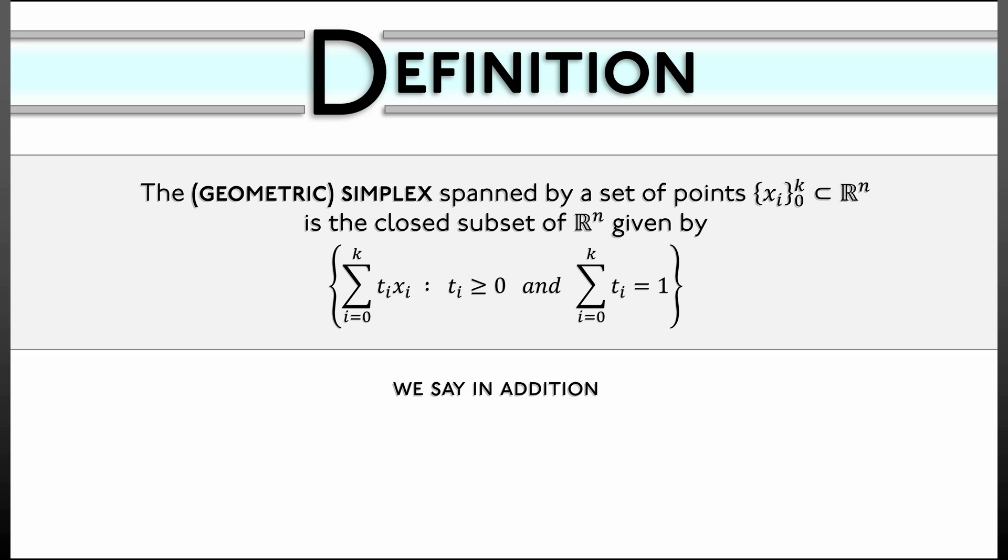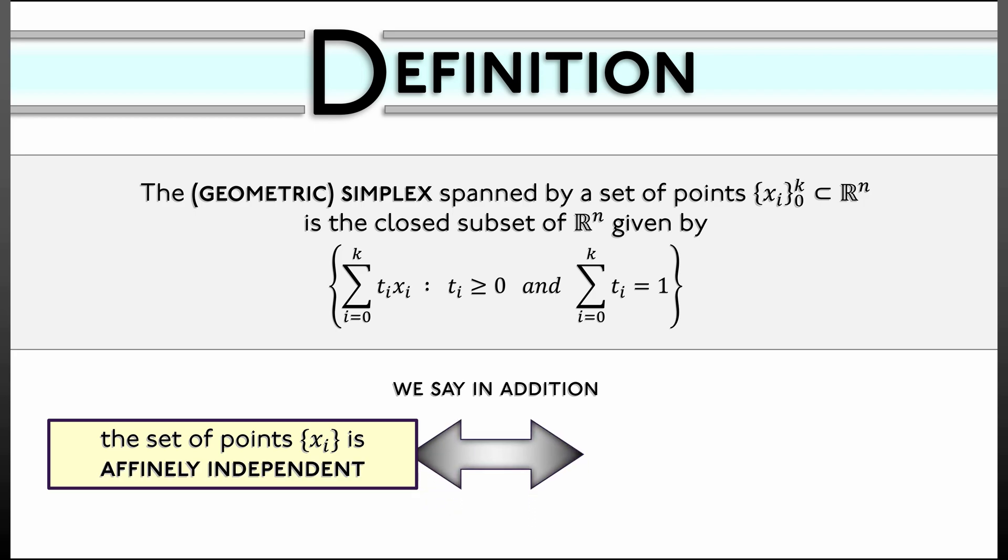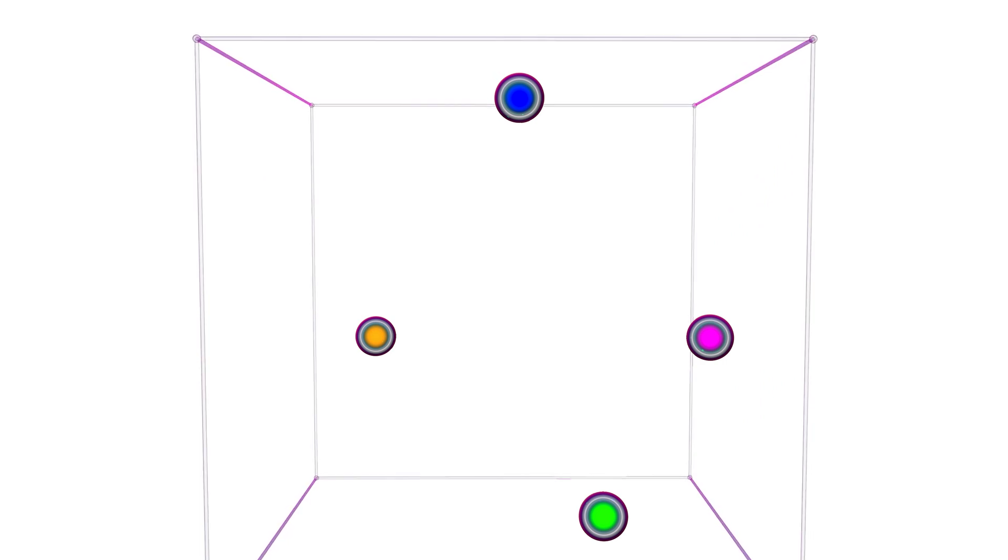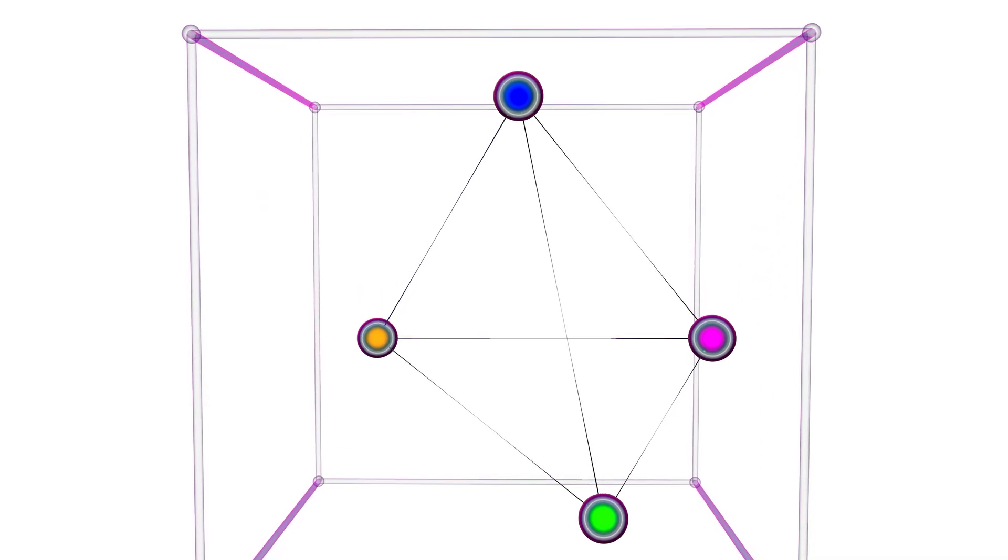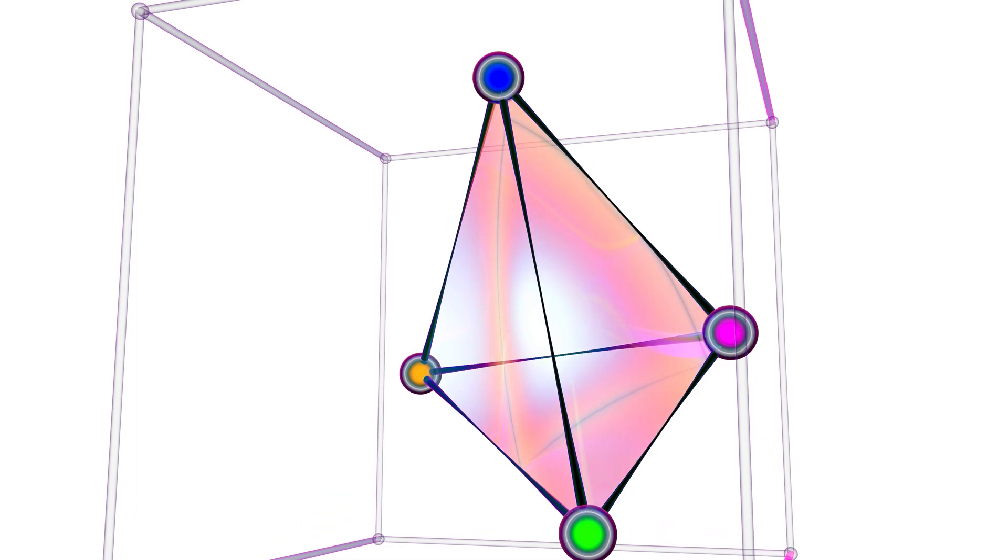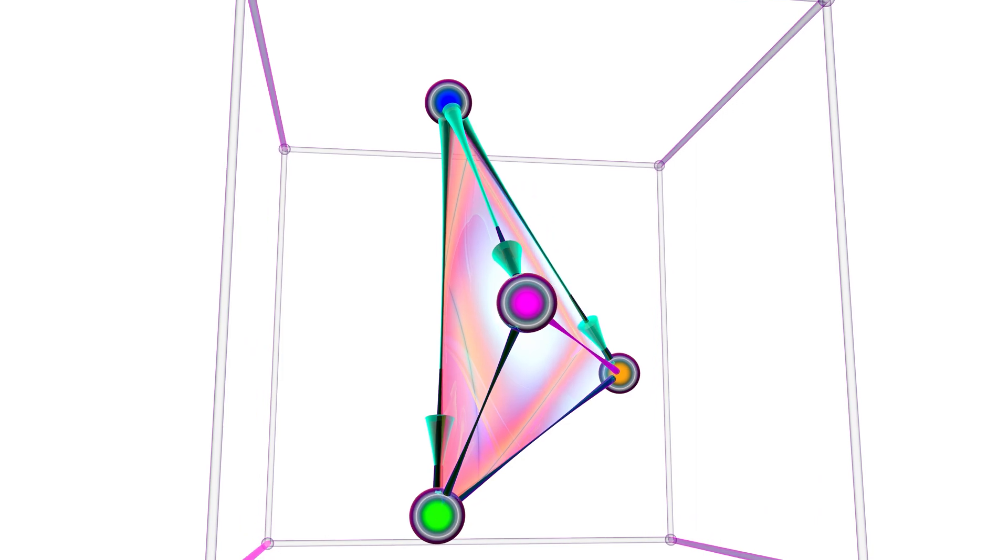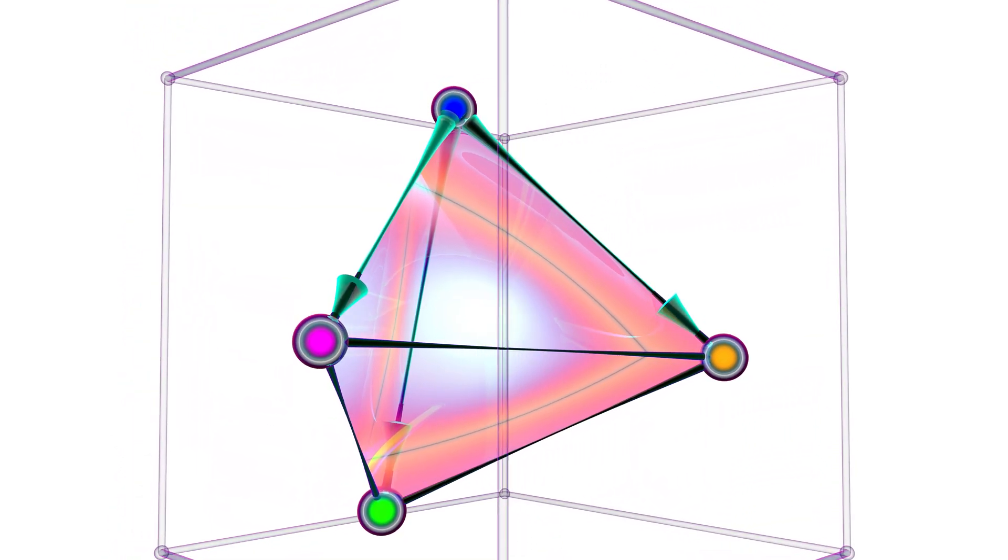We say in addition that the set of points xᵢ that defines the simplex is affinely independent if and only if the set of vectors that you get when you take the differences between xᵢ and x₀, as i goes from one to k, is linearly independent. For example, if we have a collection of four points inside of R³, then they form a linearly independent geometric simplex if those three vectors that you get when you take the differences between the xᵢ and x₀ are themselves linearly independent.